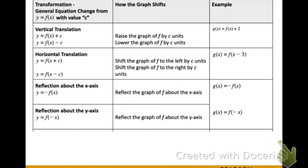First off, remember that our c value here is standing for a constant. If we are going to move the graph up or down using a vertical translation, this means that we will add or subtract a constant outside of the function. So in this example where we have f of x plus 2, this will shift the graph up 2.